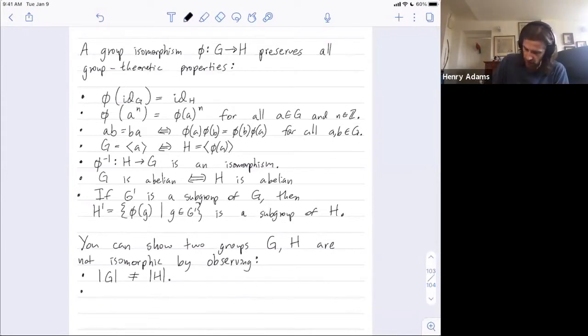What if G is cyclic, generated by one of its elements, but H is not? Then they're certainly not isomorphic. Maybe G is abelian but H is not - definitely not isomorphic.